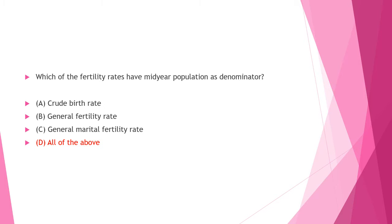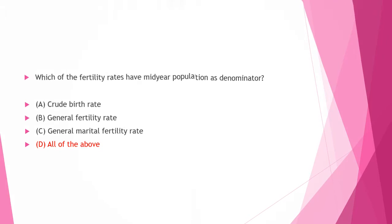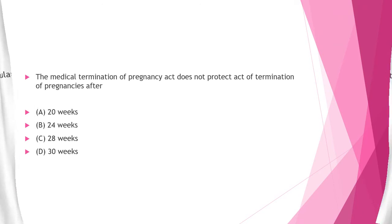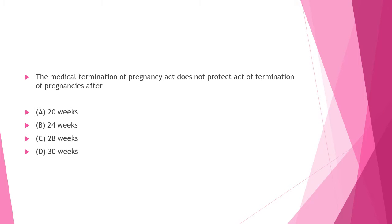Next question: The Medical Termination of Pregnancy Act does not protect termination of pregnancy after — Option A: 20 weeks, Option B: 24 weeks, Option C: 28 weeks, Option D: 30 weeks. Answer to this question is Option A: 20 weeks.